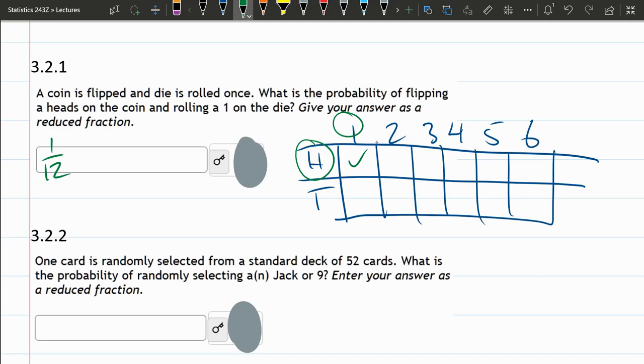Now what I just did, I sidestepped the rules, the AND rule, right? So you can multiply probabilities. Let's think about this question by multiplying probabilities.